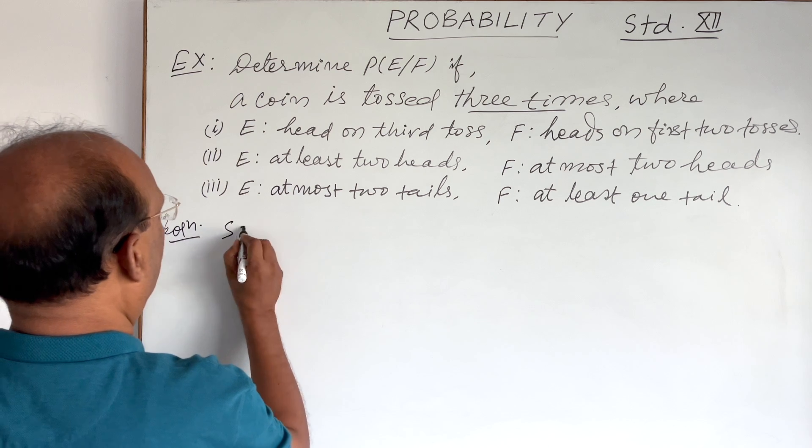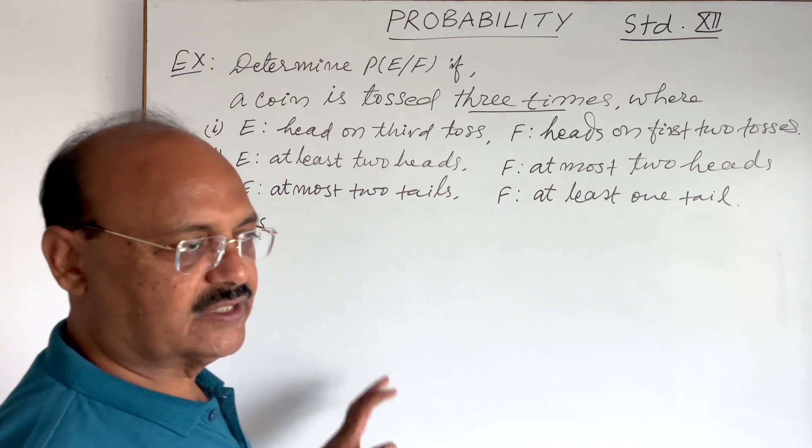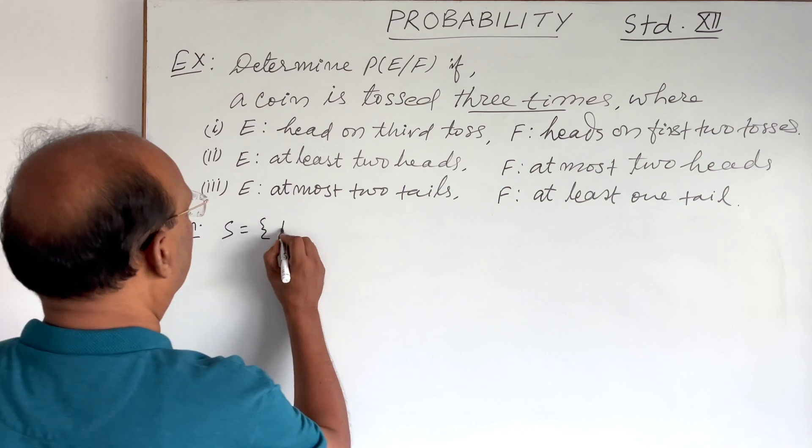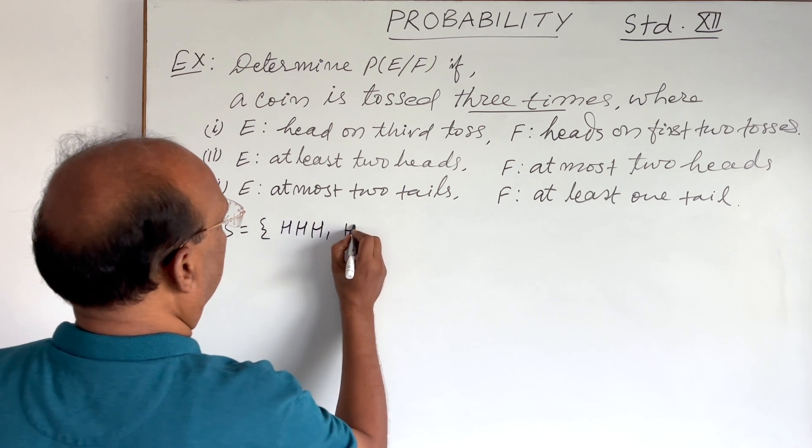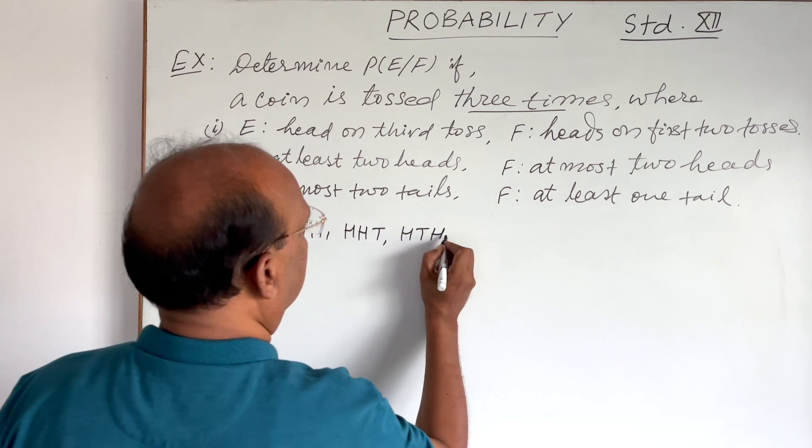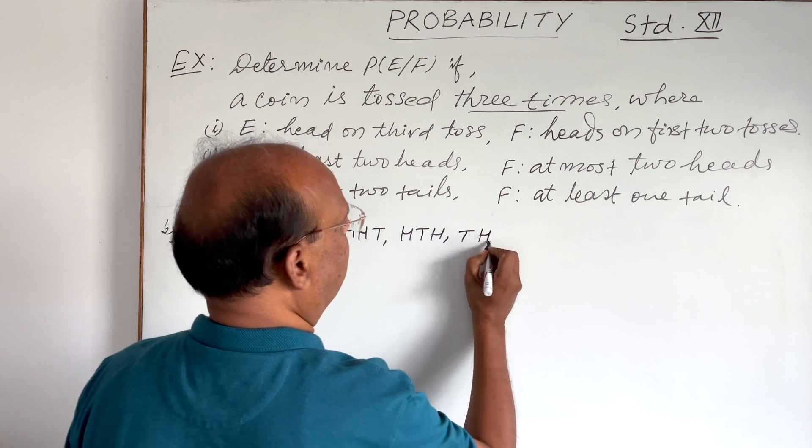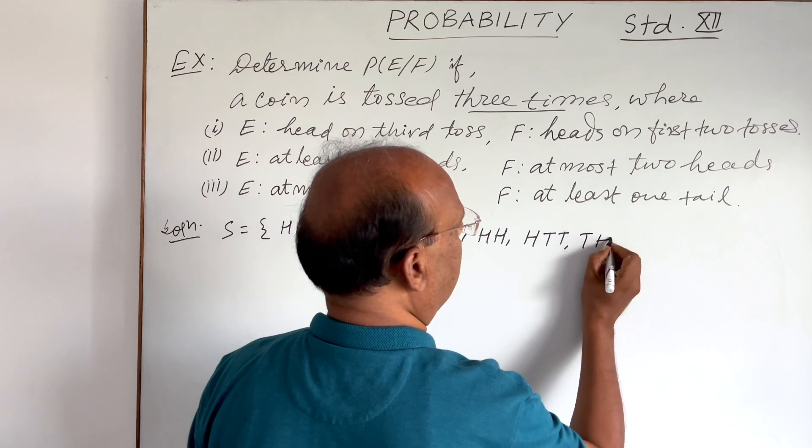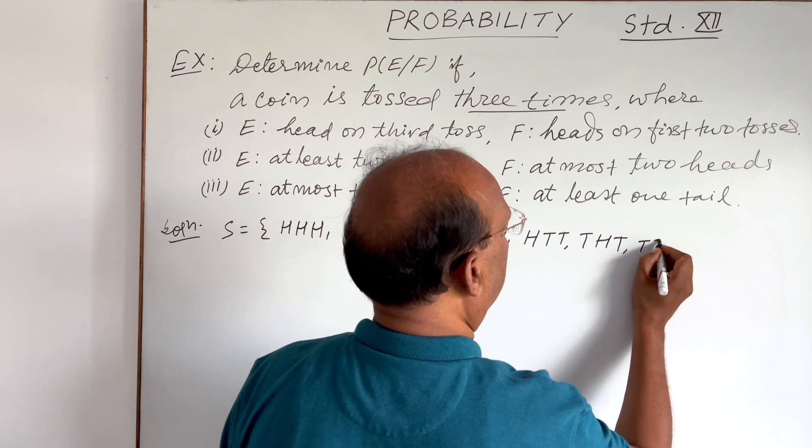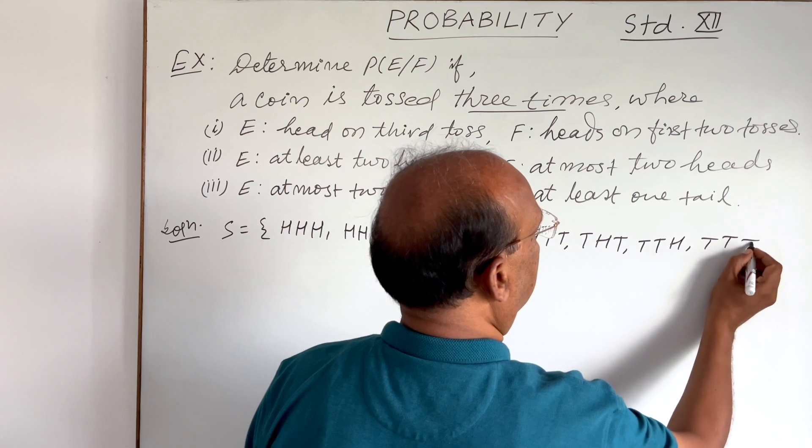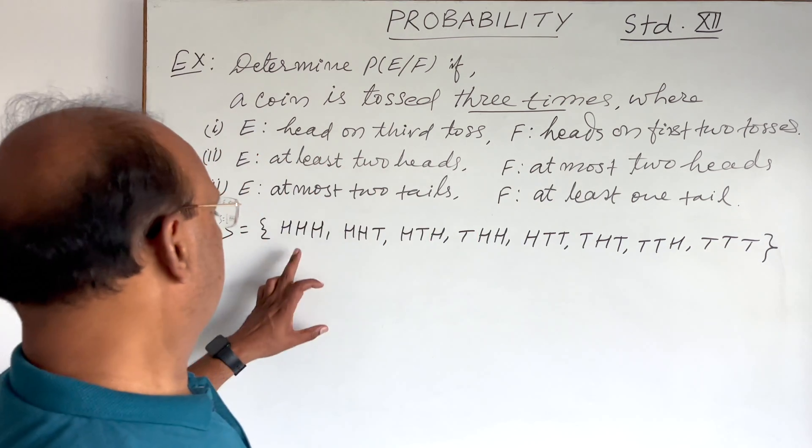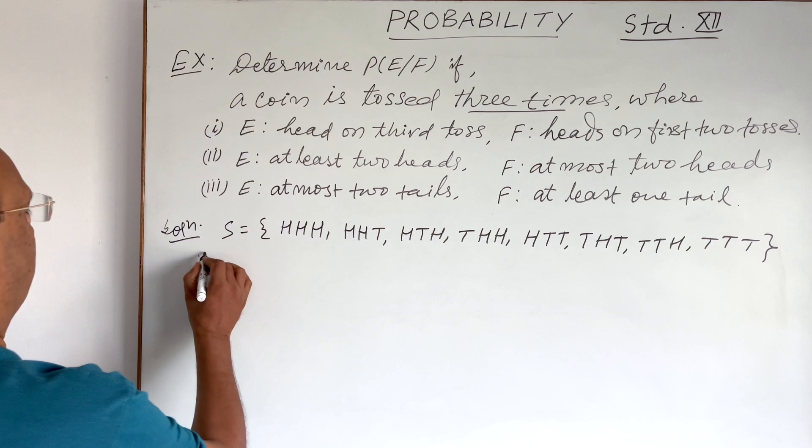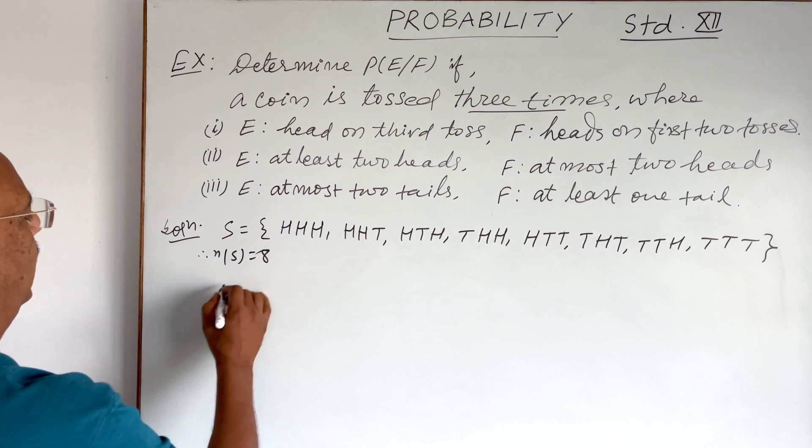First of all, we will get the sample space, all the possible outcomes when a coin is tossed three times. So that will be HHH, HHT, HTH, THH, HTT, THT, TTH, and TTT. In total, eight elements. So therefore, N(S) is equal to 8.